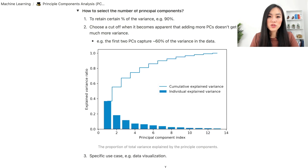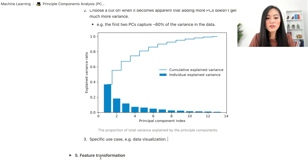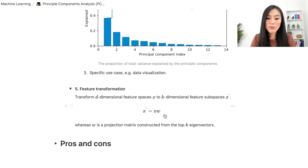If we want to use PCA to visualize data, then k should be two and at most three. The final step is feature transformation: we transform the d-dimensional feature space X to a k-dimensional feature subspace X prime, where X prime equals X times W, and W is a projection matrix constructed from the top k eigenvectors chosen in the previous step.